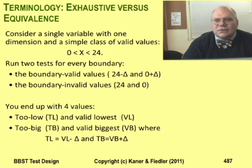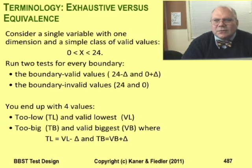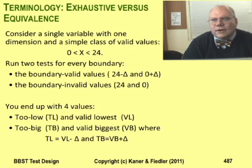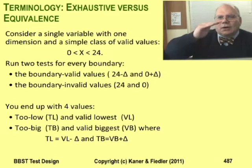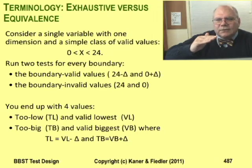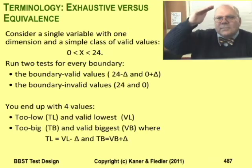The first distinction is exhaustive testing versus equivalence based. You already know this distinction, so I'll use it to introduce some notation. When you do an equivalence class analysis on the primary dimension of a single order variable, you typically get the usual four boundaries of interest: the largest and smallest valid values, and values barely below the smallest valid and barely above the largest valid.